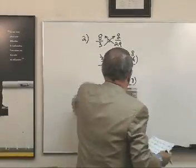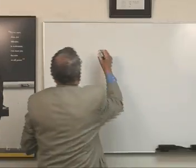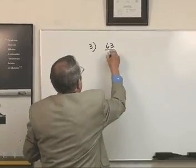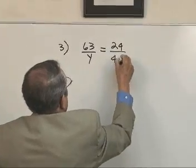All right, the last one, not difficult. You don't panic, you know how to do these. 63 is to y as 24 is to 4.8.